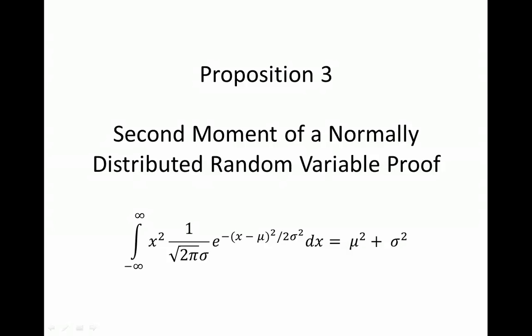In this video I will talk about the second moment of a normally distributed random variable. I will prove that the second moment, which is this function here, equals mu squared plus sigma squared for a normal random variable.